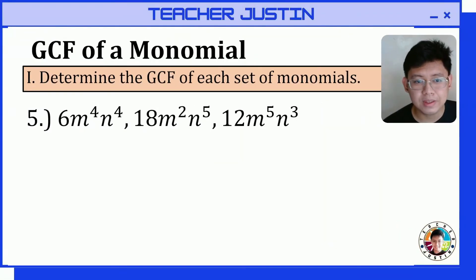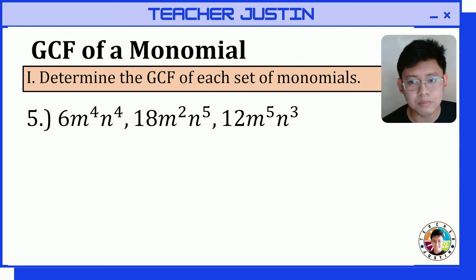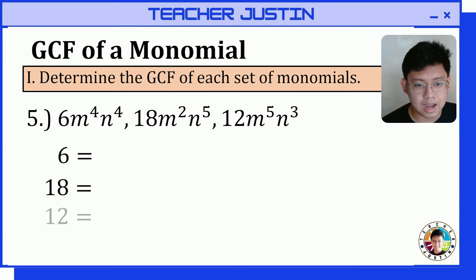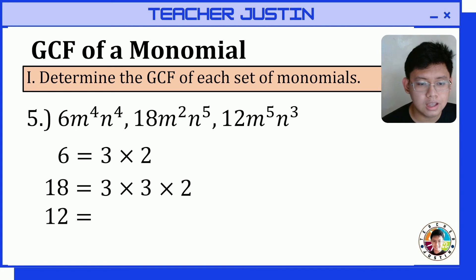For our fifth item, we determine the GCF of 6m to the 4th n to the 4th, 18m squared n to the 5th, and 12m to the 5th n cubed. Let's first focus on the numerical coefficients. We get the prime factors of 6, 18, and 12. The prime factors of 6 are 3 times 2; for 18, it's 3 times 3 times 2; and for 12, it's 3 times 2 times 2.